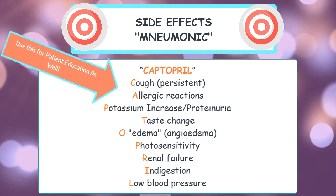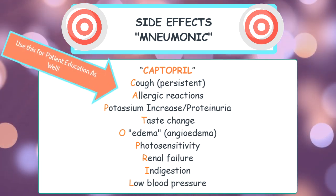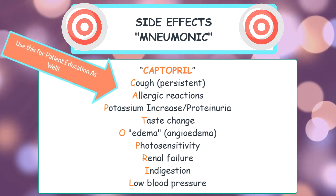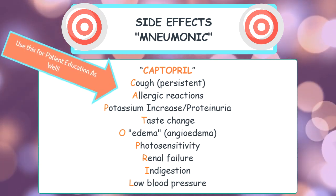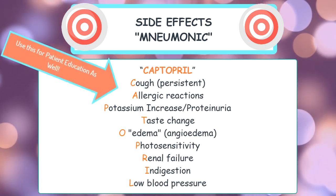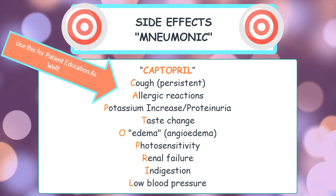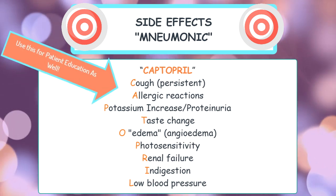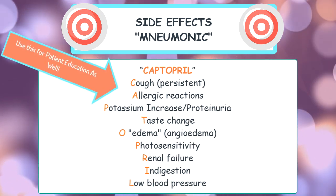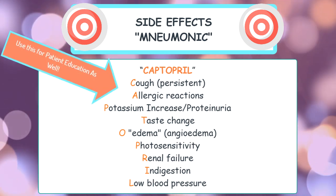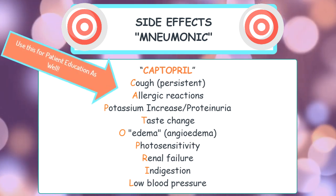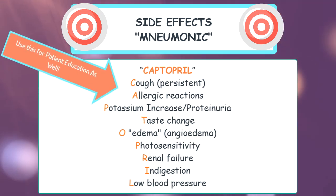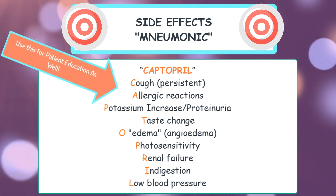ACE inhibitors may cause renal failure, indigestion, and as we've learned, low blood pressure. Because ACE inhibitors decrease the constriction of the vessels, making them wider — which means vasodilation — the blood pressure decreases because the peripheral vascular resistance decreases.